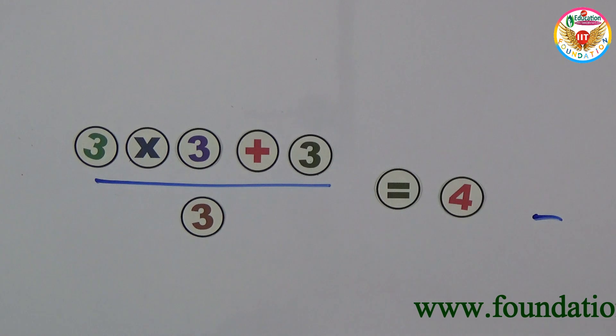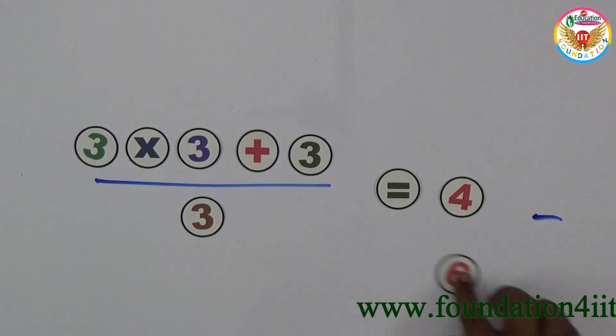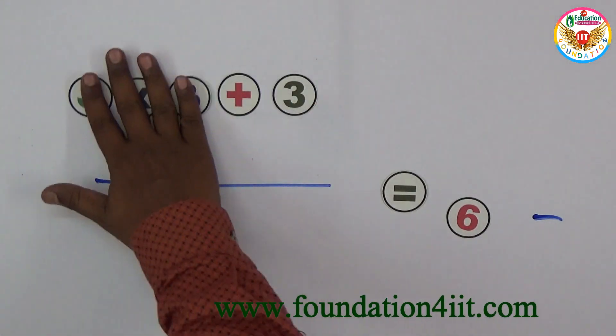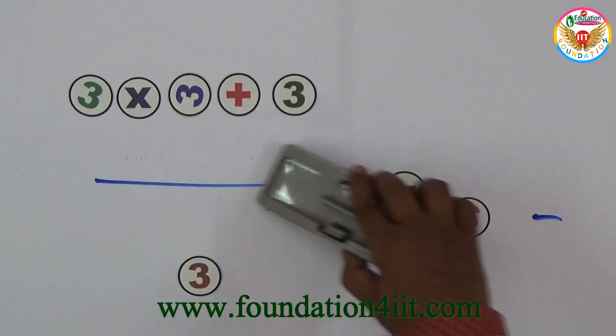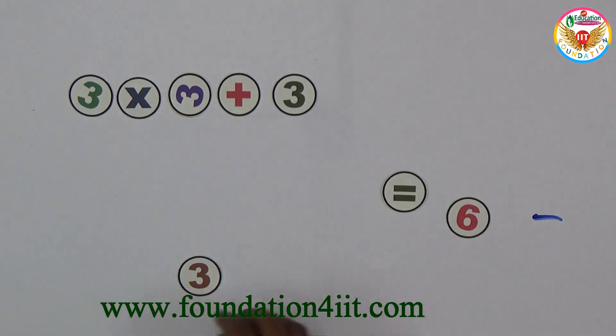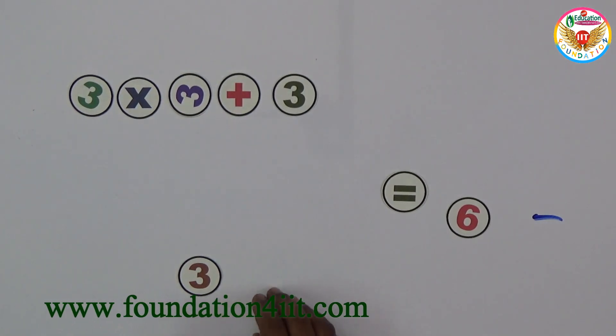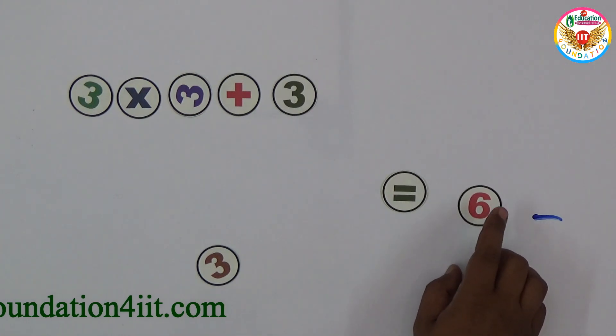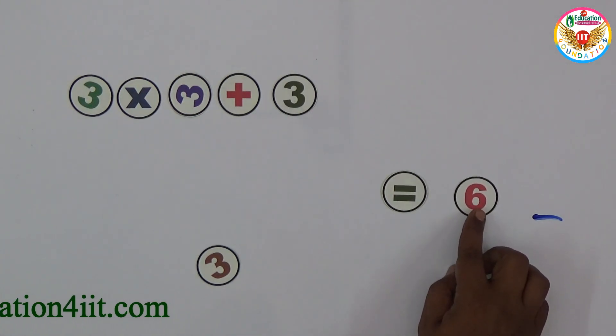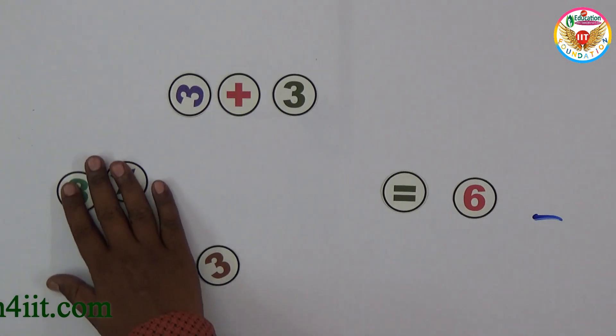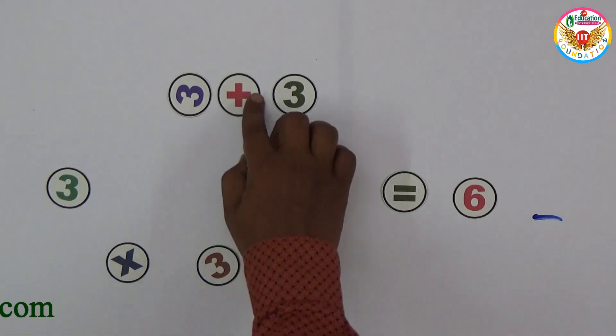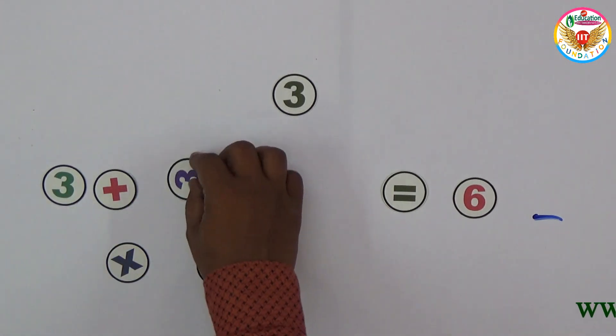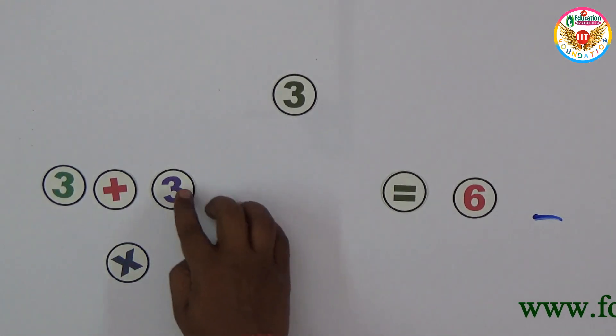And one more solution to make equal to 6. To make equal to 6 instead of 4, what to do? I will show the solution. Here is 3+3. 3+3 is 6.